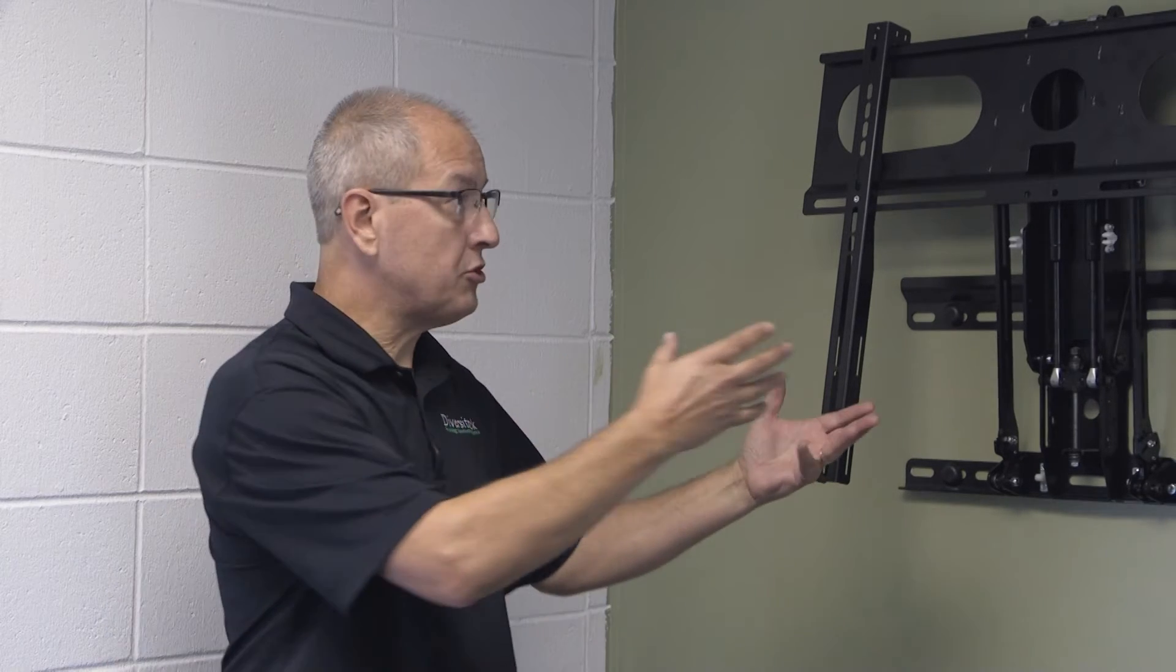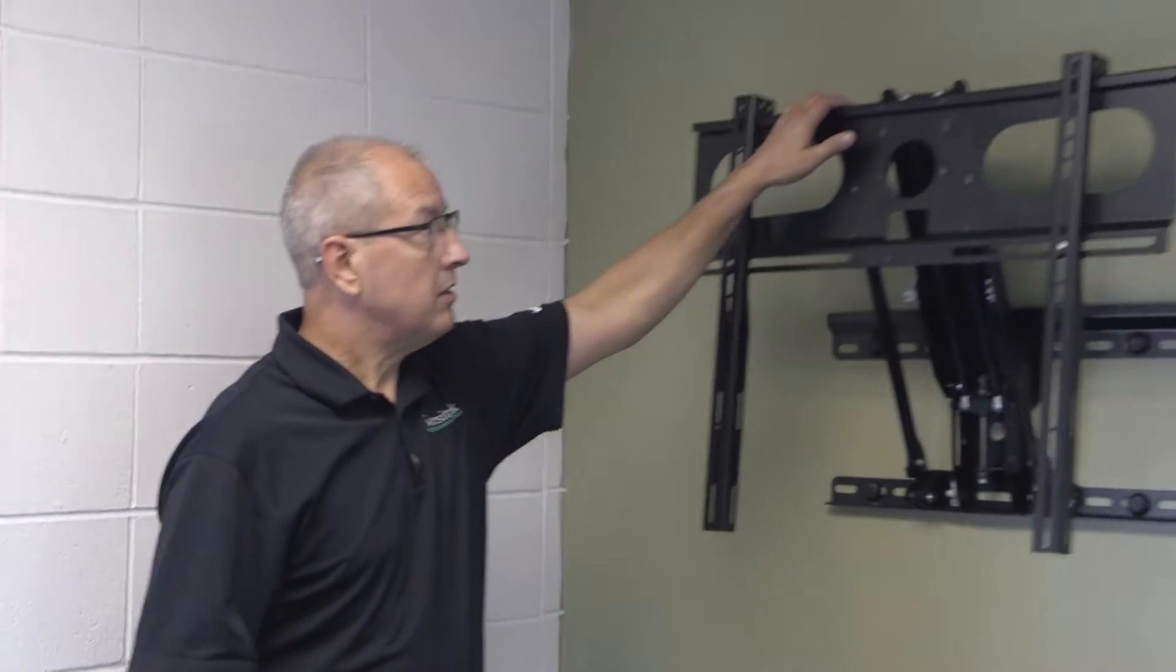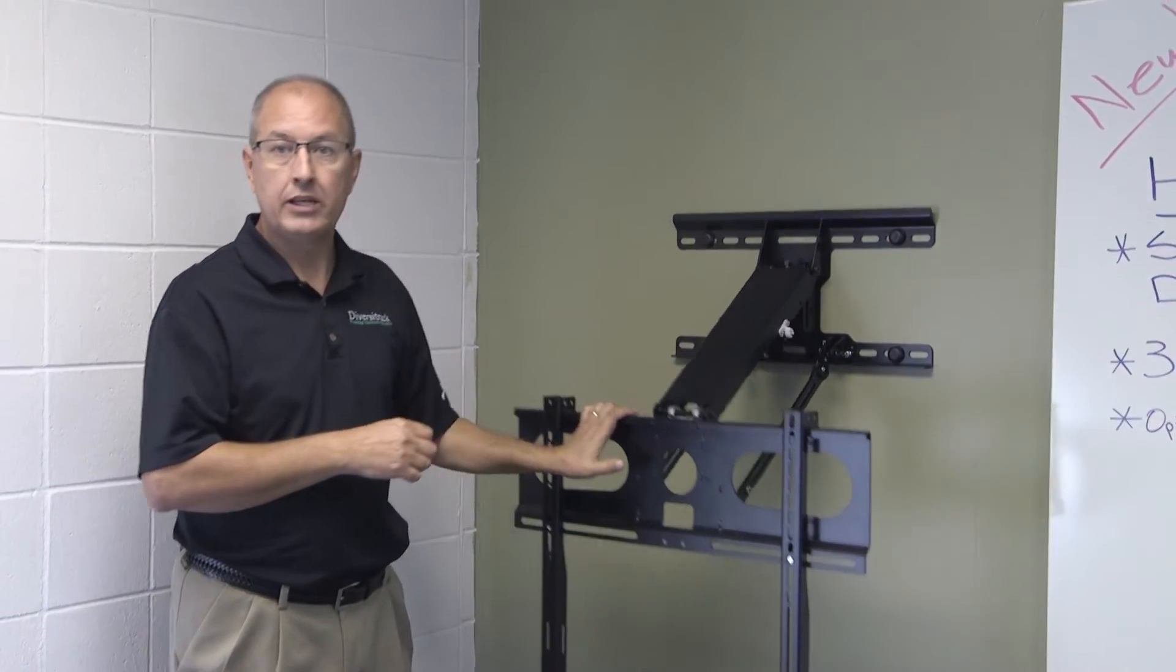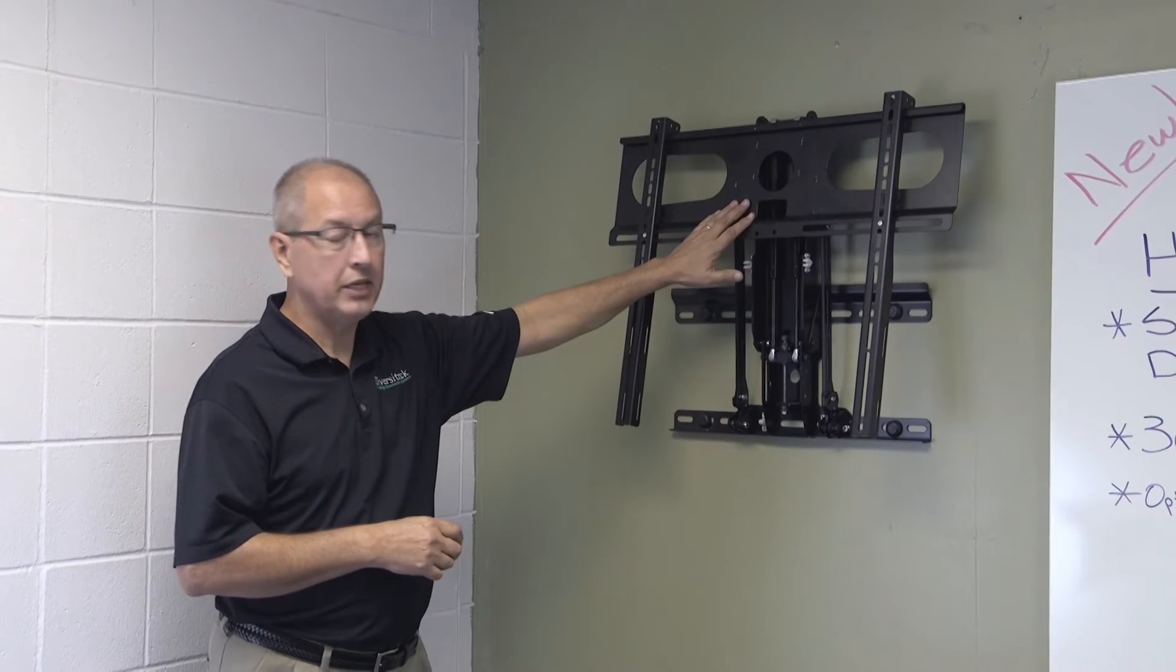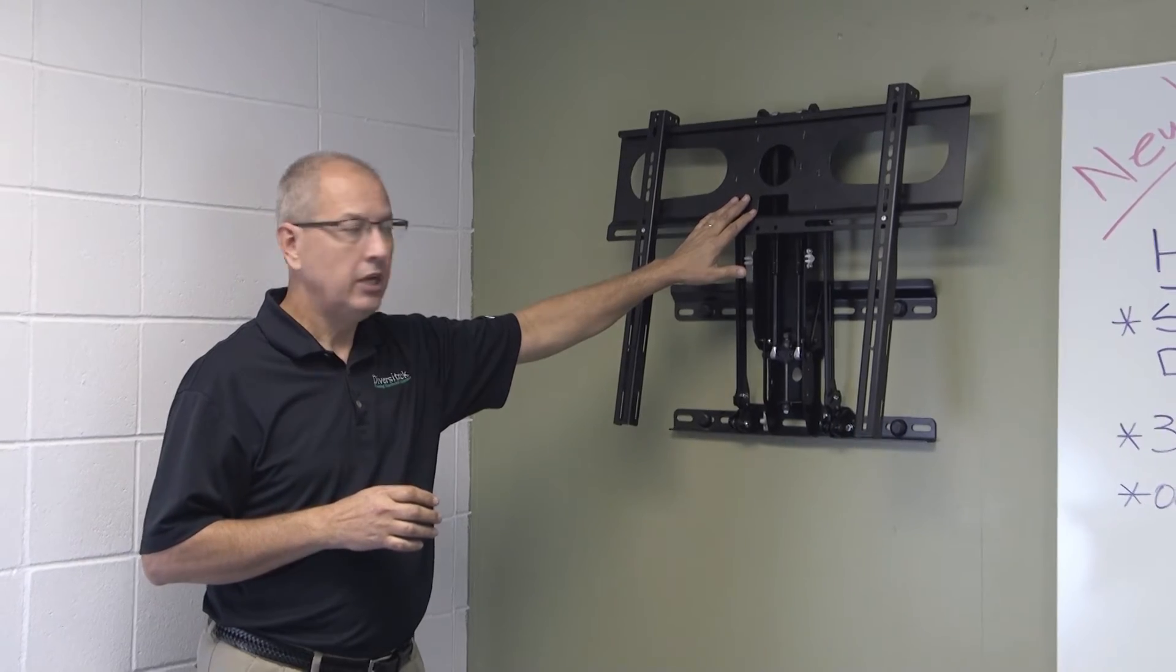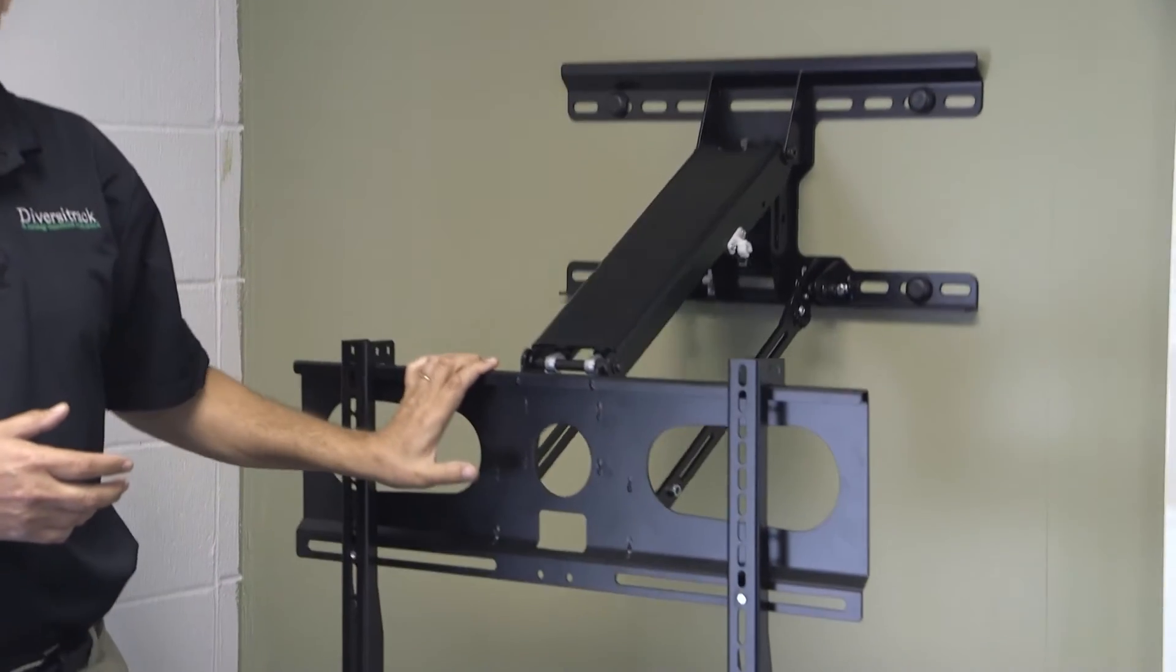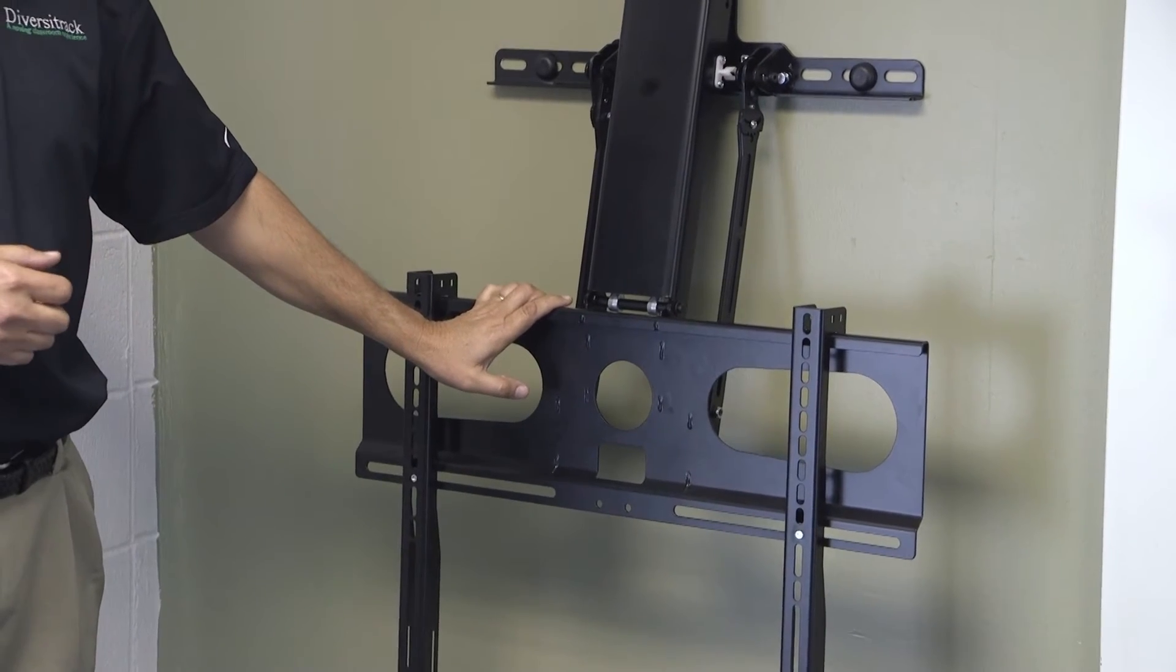I'd like to introduce to you the Hovermount. Hovermount is a VESA compliant mount plate that is dual piston actuated. It supports flat panel displays from 20 pounds to 125 pounds. Its range of motion is 30 inches and you can stop your display at any point during that range of motion.